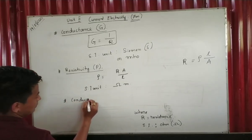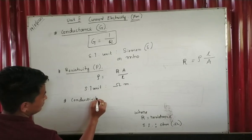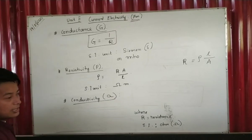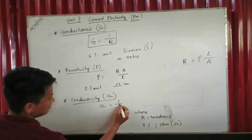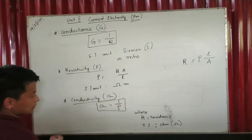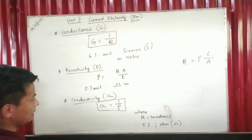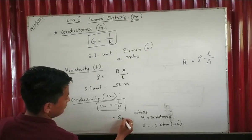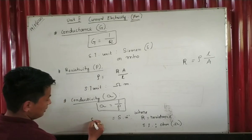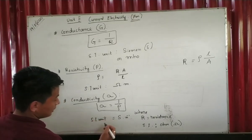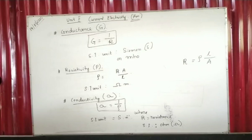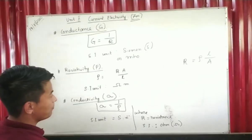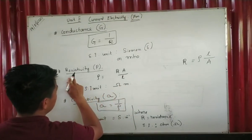Conductivity is the reciprocal of resistivity. Its unit is Siemens per meter, or ohm-meter inverse. The unit of resistivity is ohm-meter.